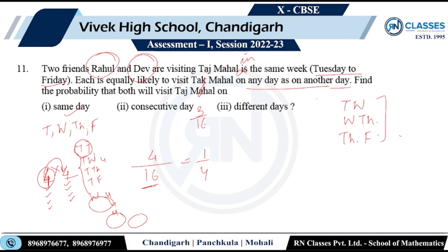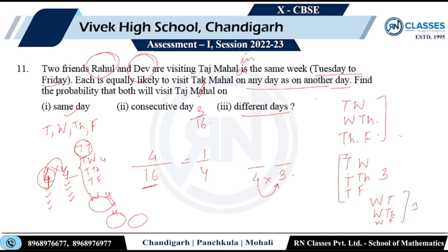For consecutive days: (Tuesday, Wednesday), (Wednesday, Thursday), (Thursday, Friday) — 3 favorable outcomes. Probability = 3/16. For different days: if Raul goes on a given day, Dale has 3 other choices. So 4 × 3 = 12 favorable outcomes, giving probability 12/16 = 3/4. With this, we have arrived at the end of the paper. Thank you.